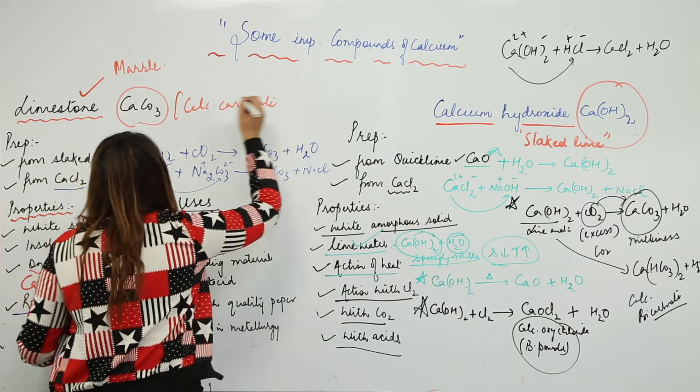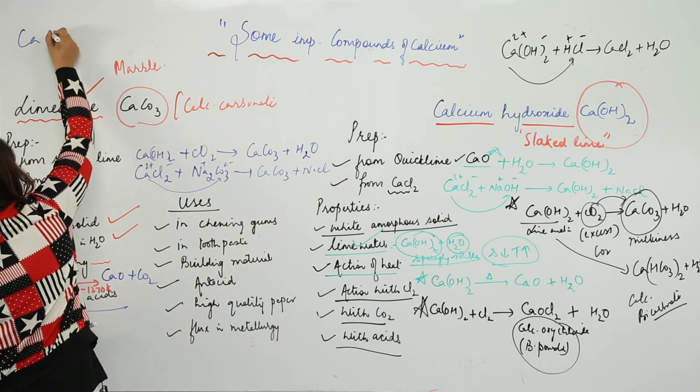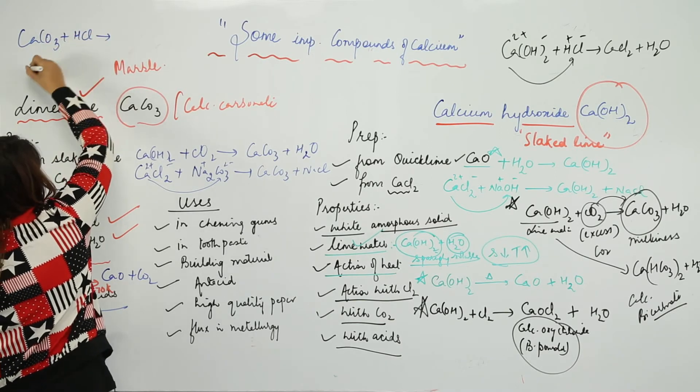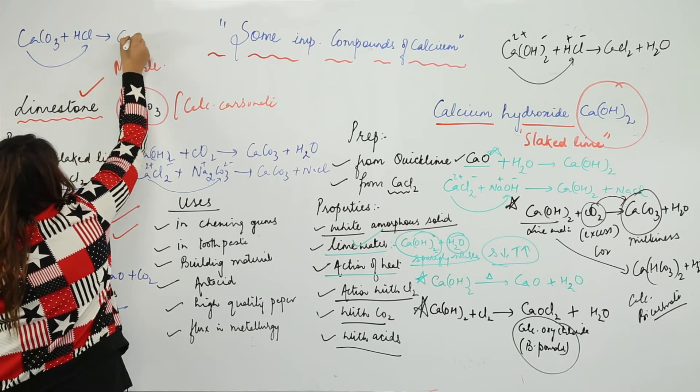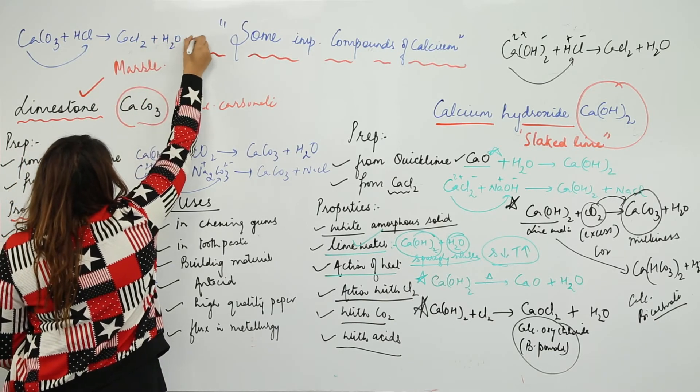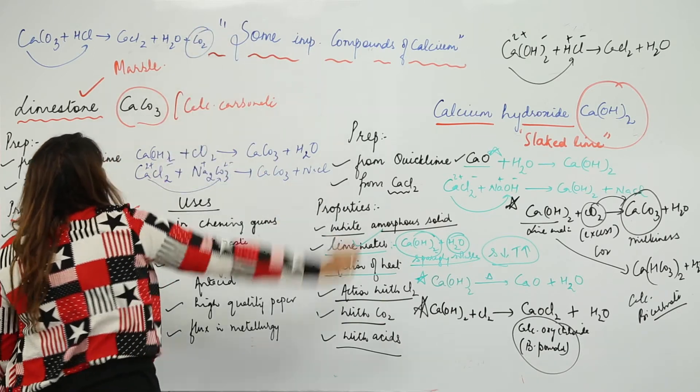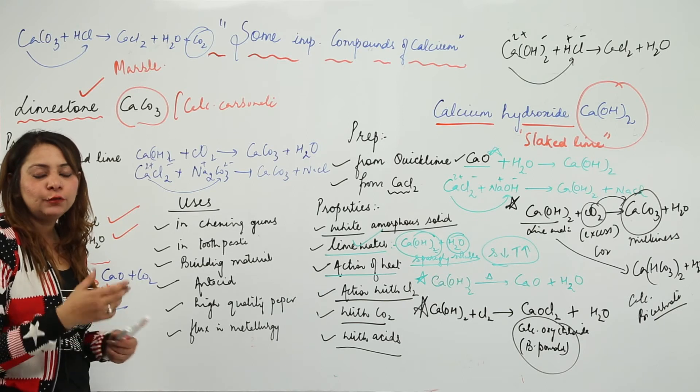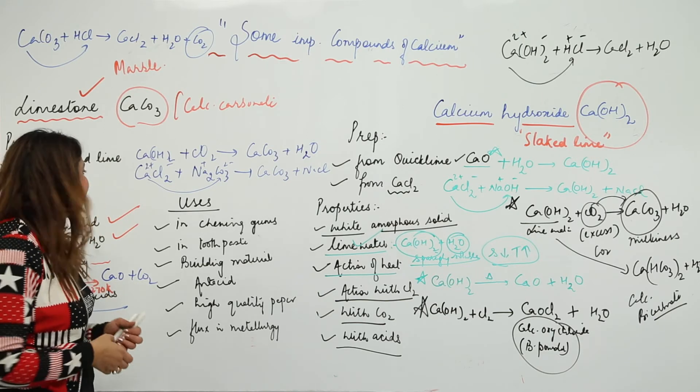For reaction with acids, suppose you have calcium carbonate and you have acid, let's say hydrochloric acid. This is going to react, and you get CaCl2 plus H2O plus CO2. So what you see is that carbon dioxide is maximum times evolved whenever you react with some oxy acids.